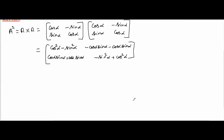Looking at the entries: cos²α - sin²α is nothing but cos2α by our trigonometry formula. And 2sinα·cosα is sin2α. So the off-diagonal entries simplify using double angle formulas.